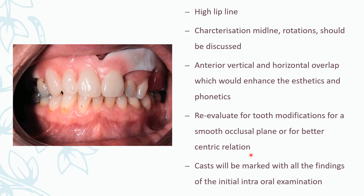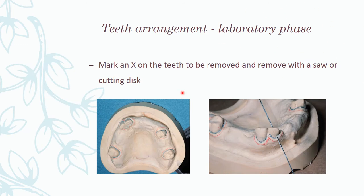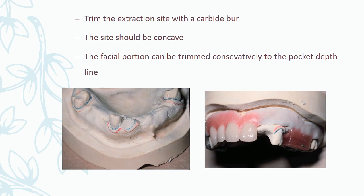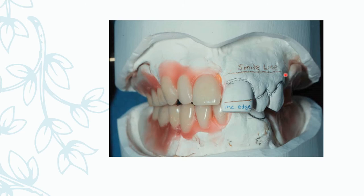The cast will be marked with all findings of the initial intraoral examination. For the lab phase: mark an X on the tooth to be removed, and with a saw or cutting disc trim it off, maintaining a concave surface. Trim the extraction site with a carbide bur and maintain a proper concave ridge. The facial portion can be trimmed conservatively to the pocket depth line.